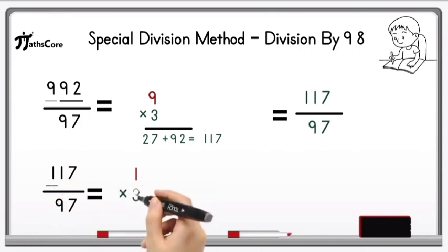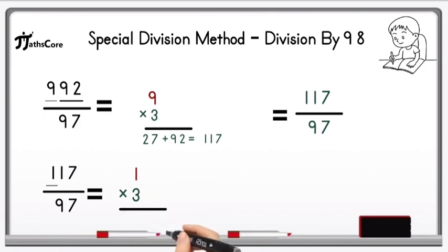In the next step we do the same procedure. Write down the hundreds plus digit 1 and multiply it with 3. So 1 multiply by 3 equals 3, and add this 17 in it. 3 plus 17 equals 20.